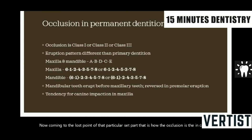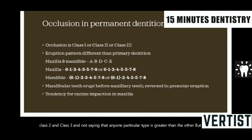As we saw, occlusion can be of three types: Class 1, Class 2, and Class 3. I am not saying that any one particular type is better than the other, but usually the Class 1 type of occlusion is the most favorable, even if you consider it for function, aesthetic, or appearance.